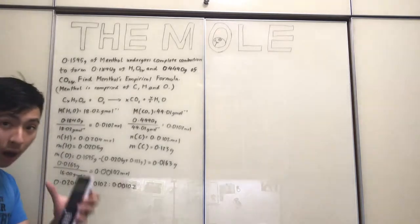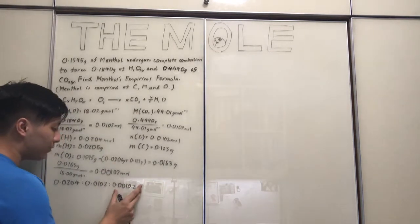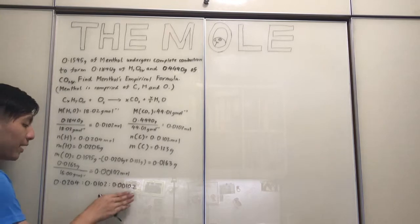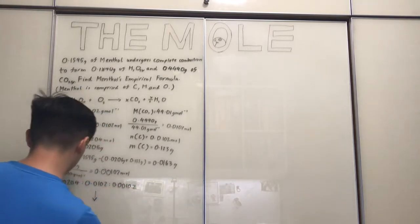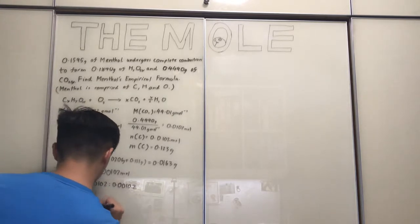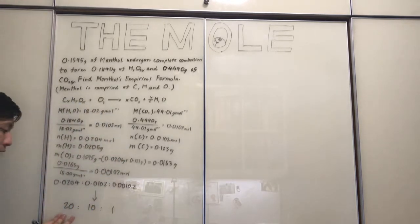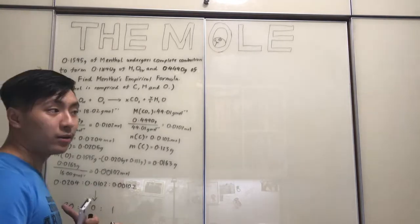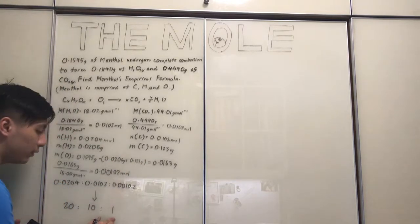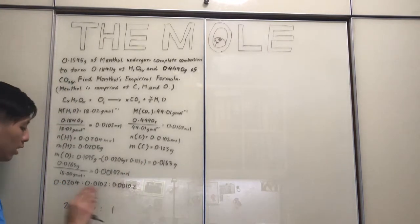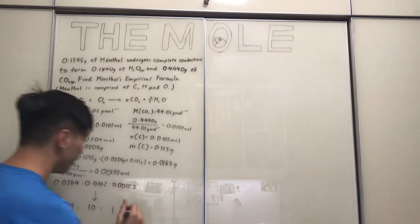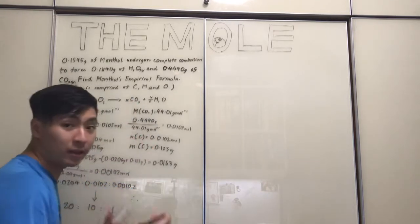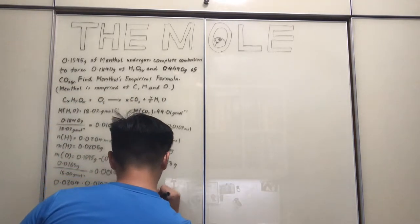Since 0.00102 is the smallest value in the ratio, we divide all values by this, giving us 20 to 10 to 1. While 20 to 10 may not look fully simplified, the 1 is fully simplified, and since the ratio between H and C simplifies to 2:1, this is the overall empirical formula — the ratio of hydrogen to carbon to oxygen in menthol.